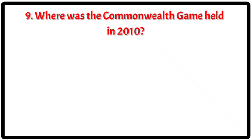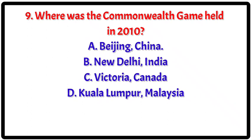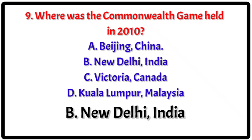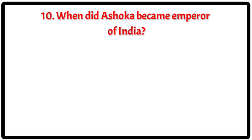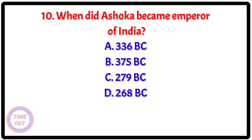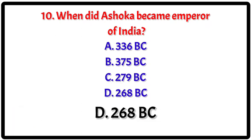Question 9: Where was the Commonwealth Games held in 2010? Your options. The correct answer is B — New Delhi, India. Question 10: When did Ashoka become Emperor of India? Your options. The correct answer is A — 268 BC.